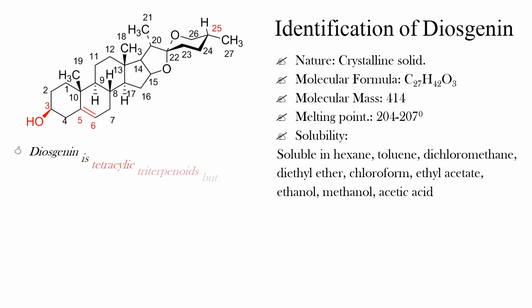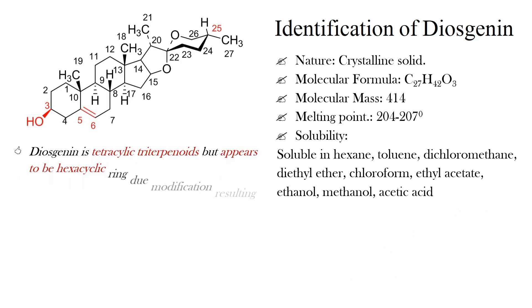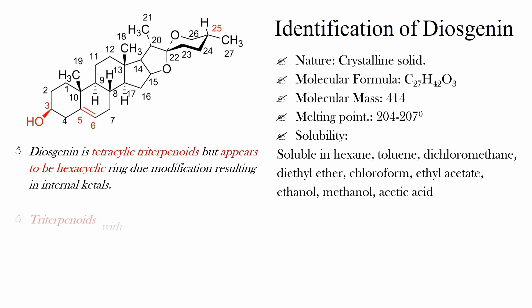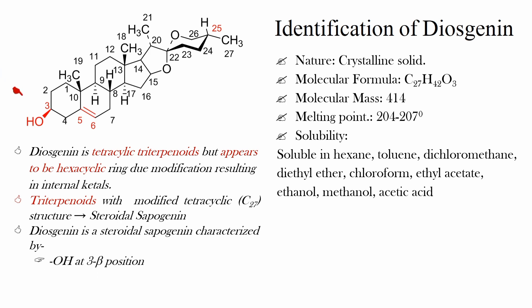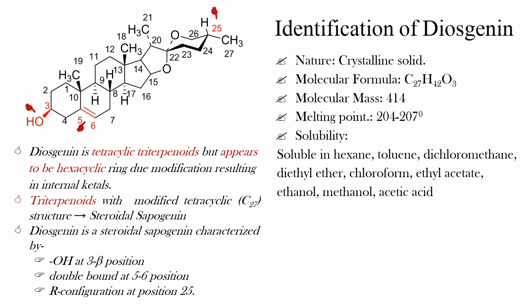Coming to its chemical structure, diosgenin is a tetracyclic triterpenoid but appears to be hexacyclic due to modifications resulting in internal ethers. A triterpenoid with a modified tetracyclic ring is called a steroidal sapogenin. Diosgenin is a steroidal sapogenin characterized by an OH at the 3-beta position, a double bond at the 5–6 position, and R-configuration at position 25.